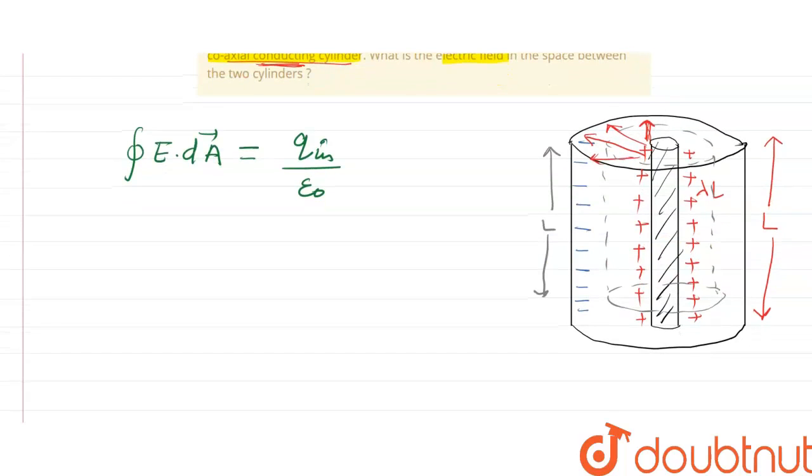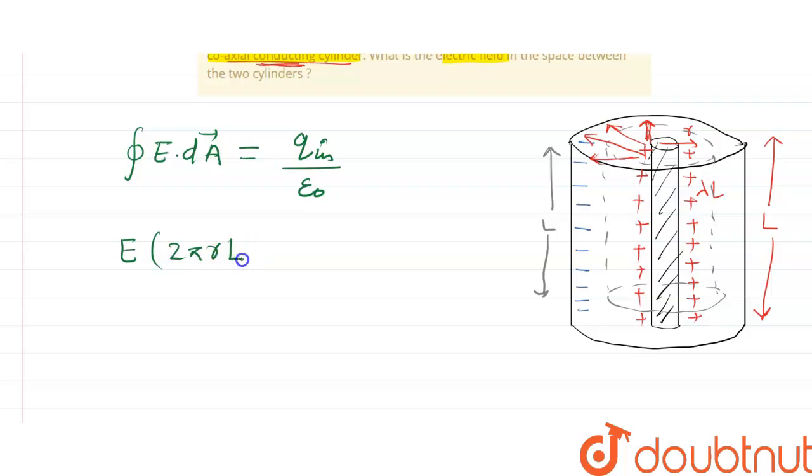So we are going to use this equation. We know that the area of the surface - we are observing it at a distance r. So we can write E times 2 pi r times L. This is the surface area of the Gaussian surface.